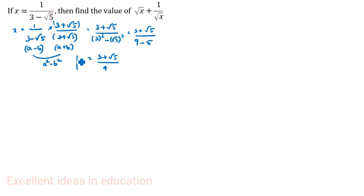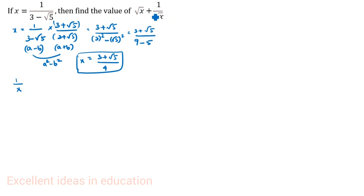So x is equal to 3 plus root 5 divided by 4. Now we will find 1 by x. You see the question asks for root x plus 1 by root x, so we find x first, then 1 by x, and then substitute into the given expression.